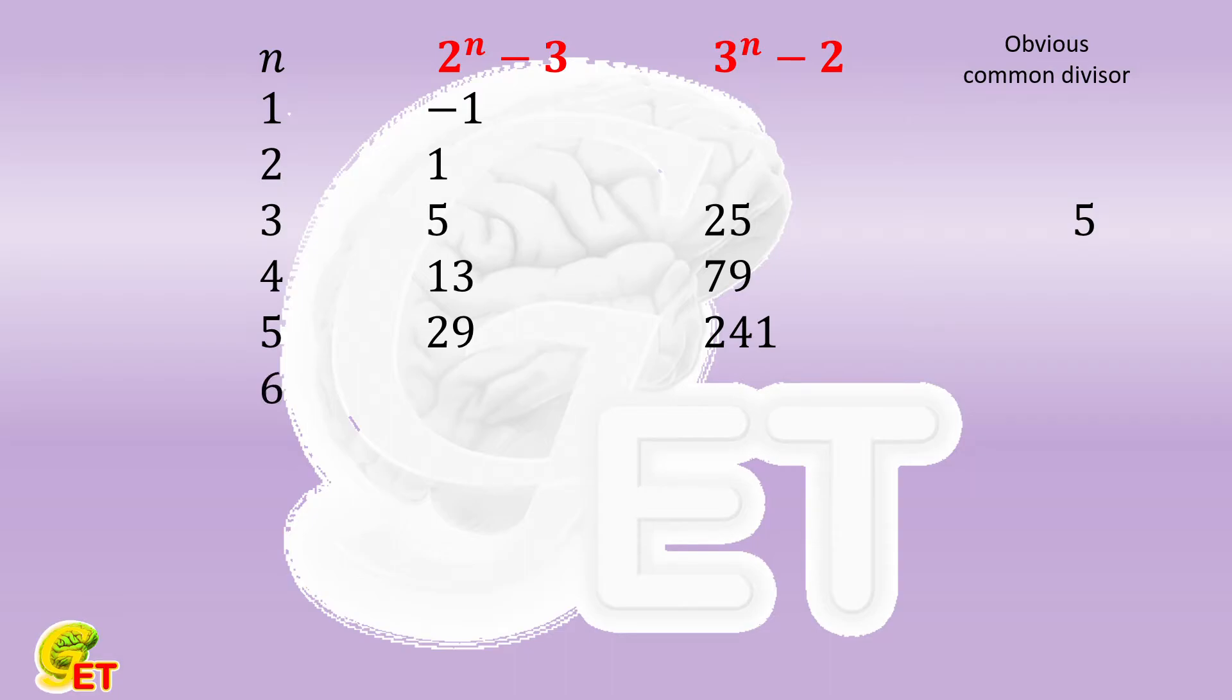n is equal to 6. 61 and 727. Co-prime. n is equal to 7. 125 and 2185. And they have an obvious common divisor of 5 again.